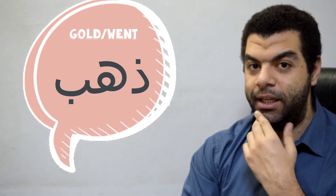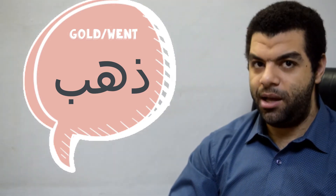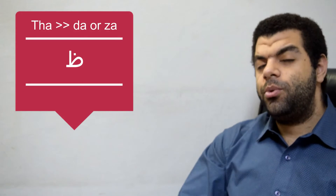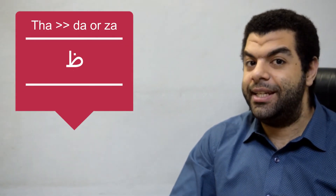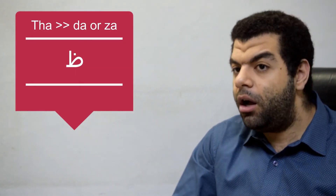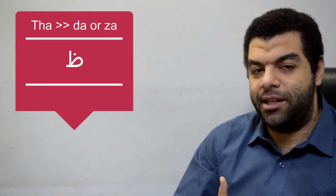But if you use the D form for 'went,' in Egyptian Arabic it doesn't mean 'went' — because we use a different verb for 'went' or 'go' in Egyptian Arabic. And this next letter is ظ (dha), which is kind of confusing and can be difficult to know, because it really depends on the word. Sometimes it sounds like a D sound, and sometimes it sounds like a Z sound.